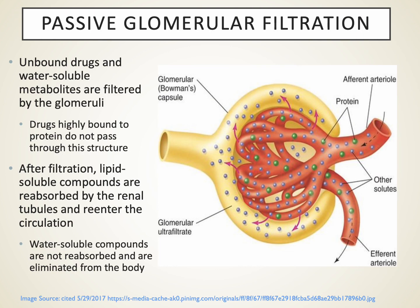For passive glomerular filtration, keep in mind that if the drug is bound to plasma protein, that renders the drug as a very large molecular weight compound. So if a patient is toxic on a highly protein-bound drug like phenytoin — the anticonvulsant, or Dilantin — what we typically find is that the Dilantin won't be excreted in the urine very much because so much of it is bound to protein in the bloodstream, and it just stays there and doesn't cross into the glomerular filtration.